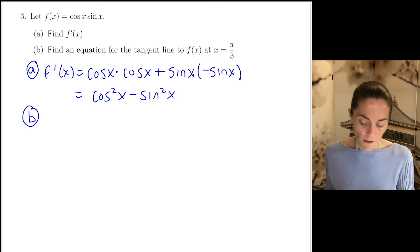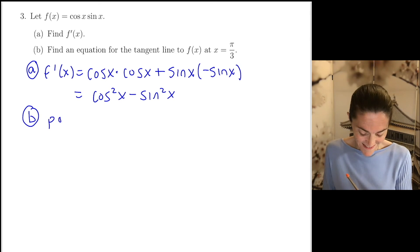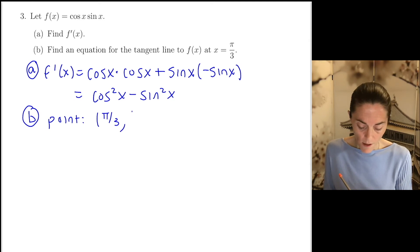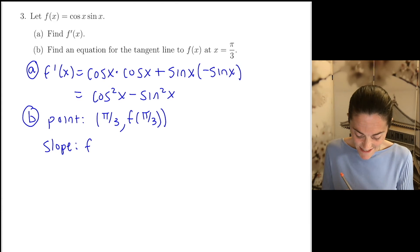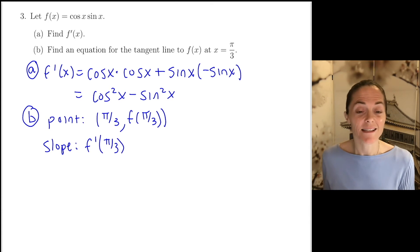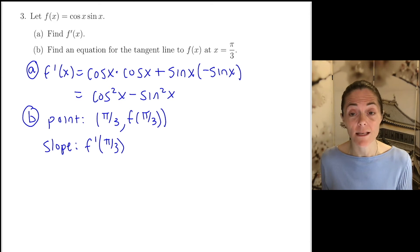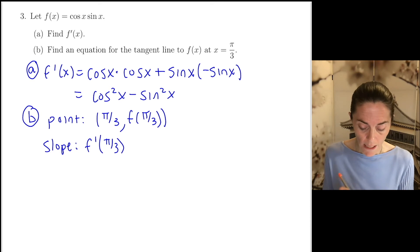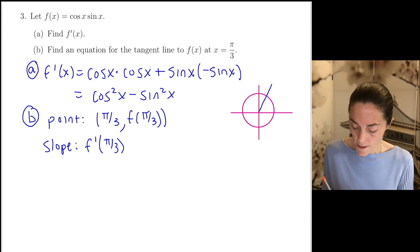Now letter B: we want an equation of the tangent line. We know a point on my graph: pi over 3, comma, f of pi over 3. And we know the slope, which is the derivative evaluated at pi over 3. We're going to have to evaluate sine and cosine at pi over 3, so let me draw a unit circle. Pi over 3 is up here.